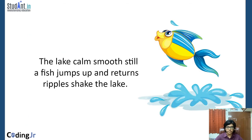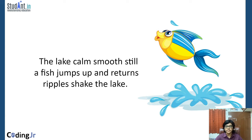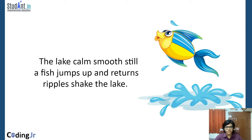Here's the haiku: 'The lake, calm, smooth, still. A fish jumps up and returns. Ripples shake the lake.' This haiku is all about fish — there were five syllables in the first line, seven syllables in the second line, and five syllables in the third line.